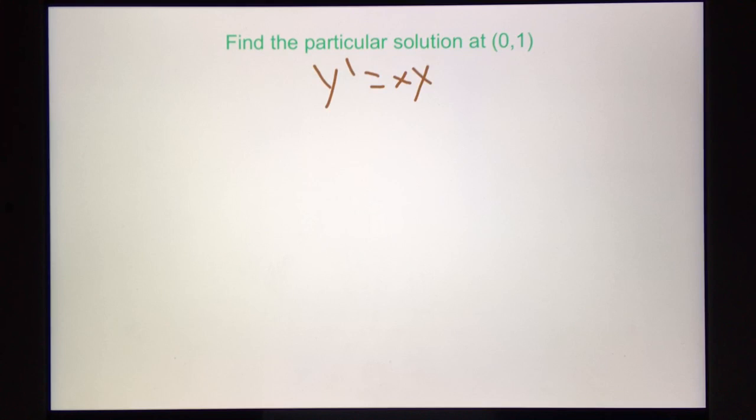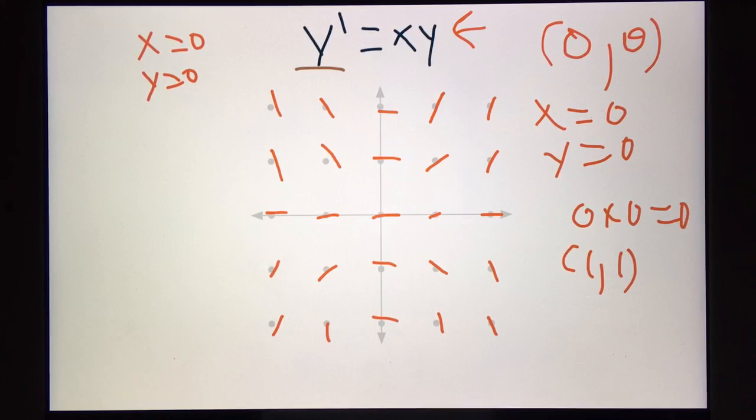What's a particular solution, you might ask? Let me show you. A particular solution is the equation of a line that runs through a point, a specific point on the slope field. So the specific point we're looking for here is 0, 1, which is right here. So we're looking for the equation of the line that runs through this point.